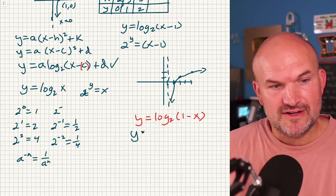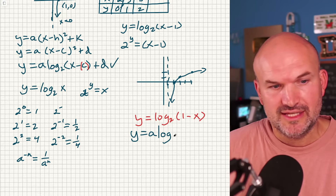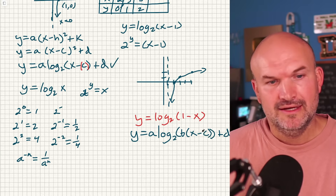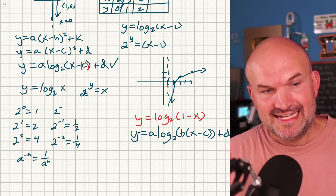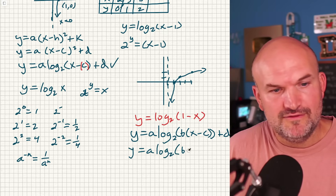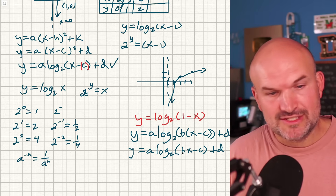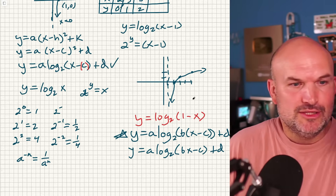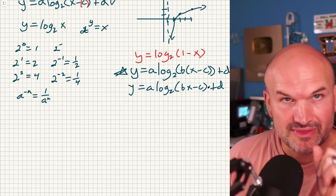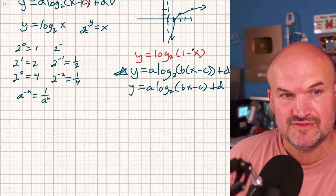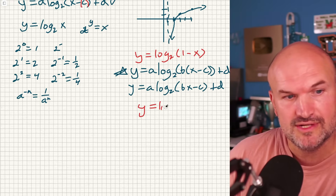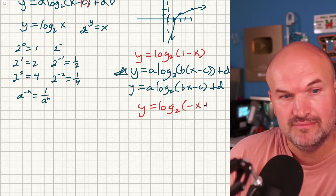So I can rewrite the general form as: log base 2 of (b times (x minus c)) plus d. Usually on a test it's written as y equals a times log base 2 of (bx minus c) plus d, and we need to put it in the factored format. For log base 2 of (1 minus x), I first put the x first, so it becomes log base 2 of (negative x plus 1).